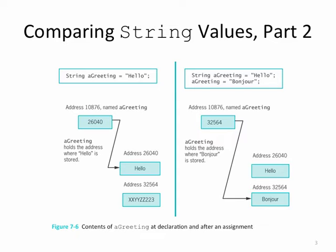Contained at 10876 is 26040, for example, the address where hello might be stored in memory. So, not hello itself, but the address or reference to where hello is stored in memory.